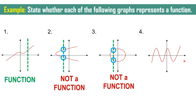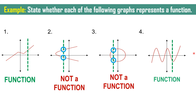Another example. Draw a vertical line here. It only intersects at one point. We may try on the other side — again, it also intersects at only one point. Therefore, this graph is considered as a function.